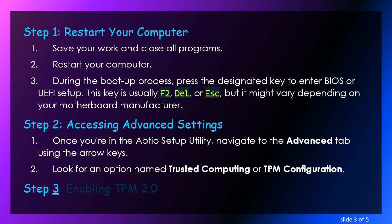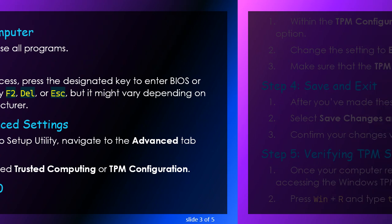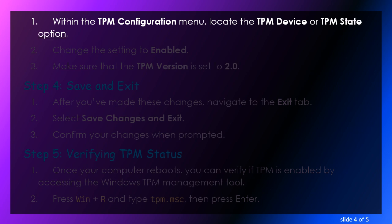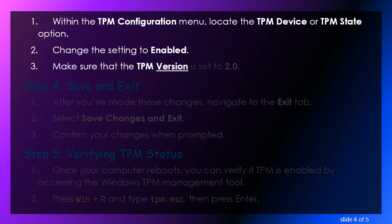Step 3: Enabling TPM 2.0. Within the TPM Configuration menu, locate the TPM Device or TPM State option. Change the setting to Enabled. Make sure that the TPM version is set to 2.0.